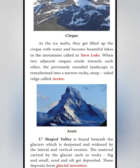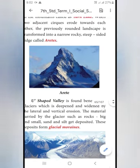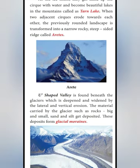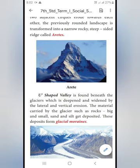Next we are going to learn about arêtes. A U-shaped valley is found beneath the glaciers, which is deepened and widened by the lateral and vertical erosion. The material carried by the glacier, such as rocks big and small, sand and silt, gets deposited. These deposits form glacial moraines.